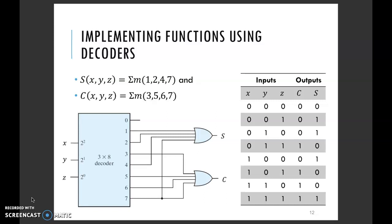Now, looking at the equation or Boolean expression for the summation, it's very easy to see that we have the summation of the minterms 1, 2, 4, and 7.